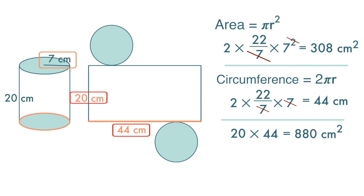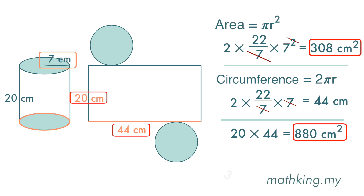The surface area of this cylinder is the sum of the two circles, 308 cm², and the rectangle, 880 cm², which is 1188 cm².